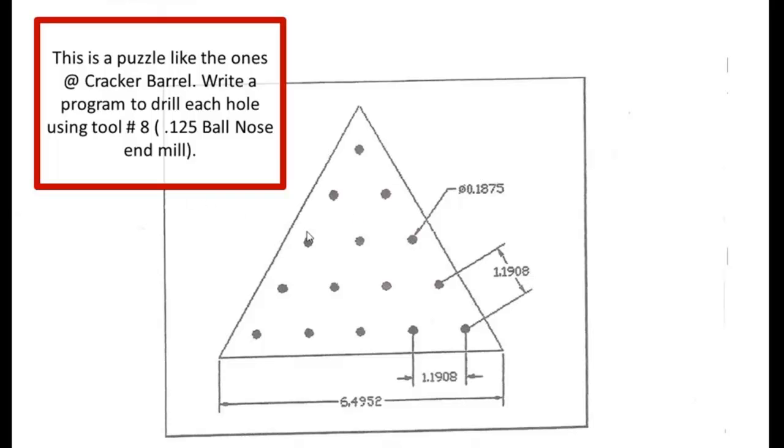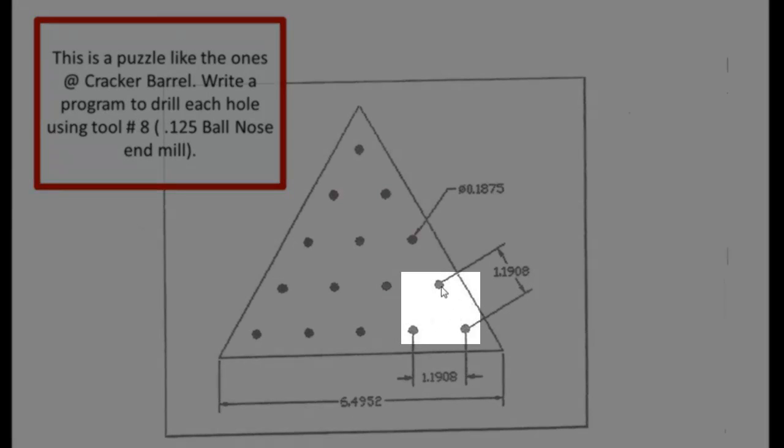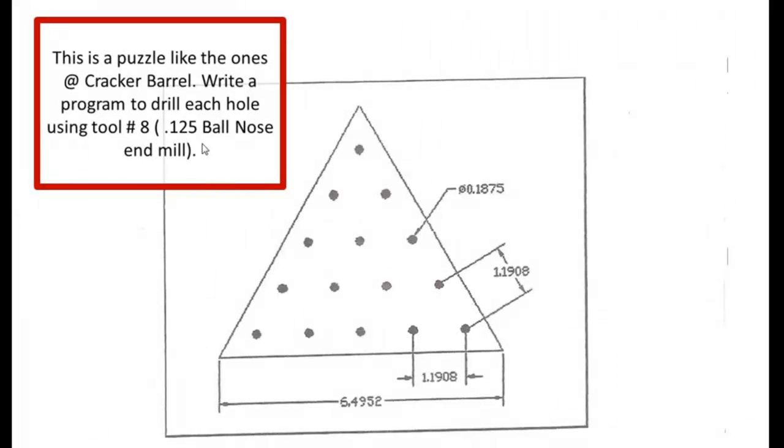I'm sure we've all used to play the little pegboard at the Cracker Barrel. This is an equilateral triangle, letting us know that all the sides are the same. We're going to program this to drill each individual hole with a 1⅛ inch ball nose end mill, and we're going to drill it a quarter of an inch deep.